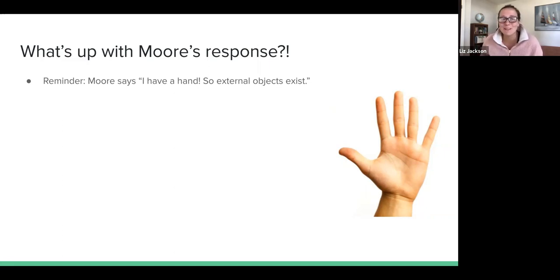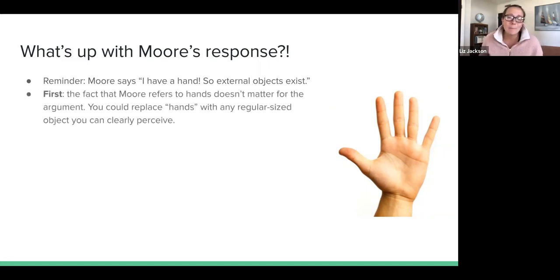It's almost just funny because you're just like, part of me is like what, and then part of me is like it's so obvious. You have a hand. Come on guys, it's common sense. So first thing to say, the fact that Moore talks about hands, that doesn't matter for the argument. You could replace hands with feet, elbows, here's a table. You could replace it with any regular size object that you can clearly perceive. So don't get hung up on the hands part. That's not essential to Moore's argument.